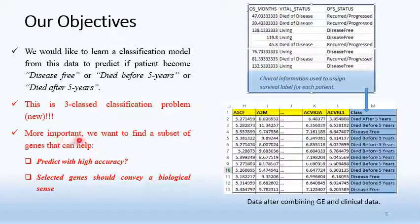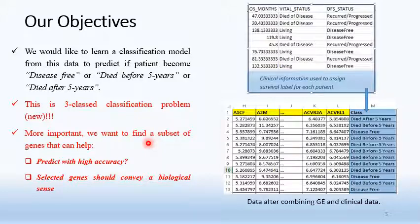Importantly, we want to find a subset of genes that can predict survivability with high accuracy, and the selected genes should convey biological sense for validation purposes.